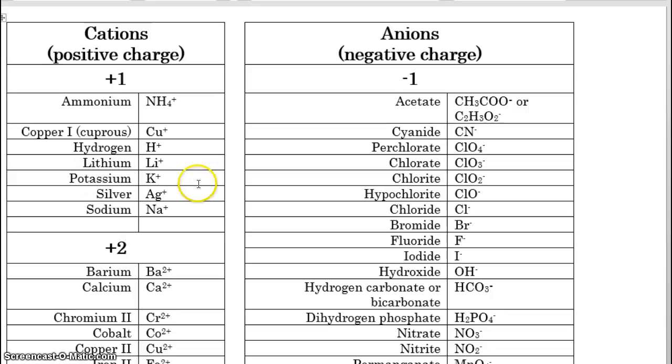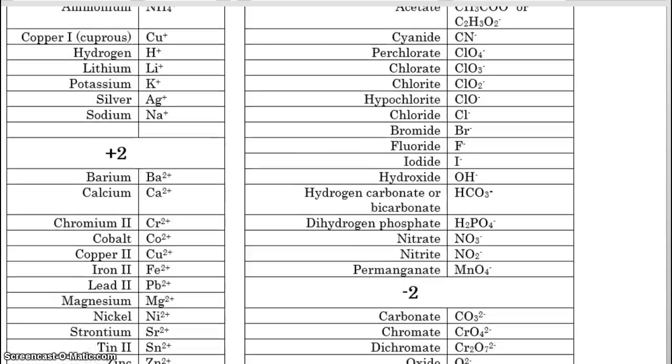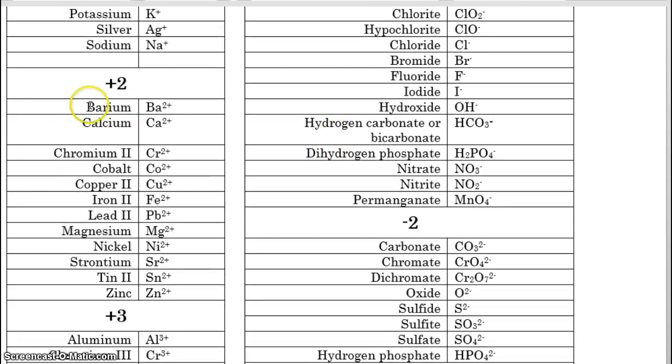Here's lithium, and potassium, and sodium. Those are all plus one. Those are all alkali metals. And here are your alkaline earth metals. You have your barium, and your calcium, and we have magnesium down here, and we have strontium here. So many of these you do already know.